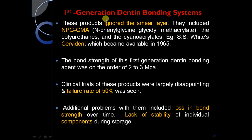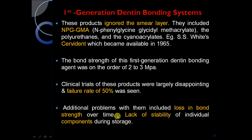First generation dentine bonding systems ignored the smear layer. They include NPG-GMA, polyurethanes, and cyanoacrylates. An example is the SS White Cervident, which became available in 1965. The bond strength of first generation agents was on the order of 2 to 3 MPa. Clinical trials were largely disappointing with a failure rate of 50%. Additional problems included loss of bond strength over time and lack of stability of individual components during storage.